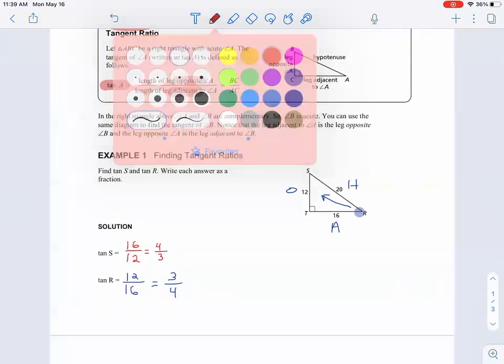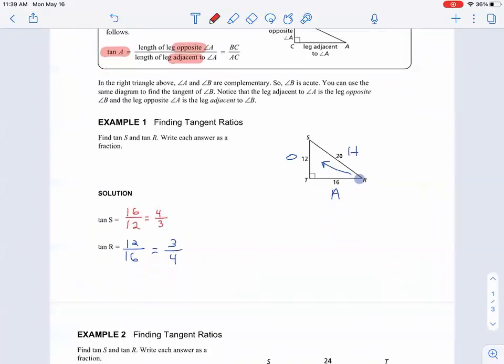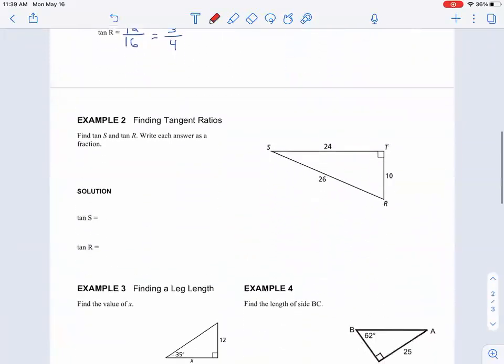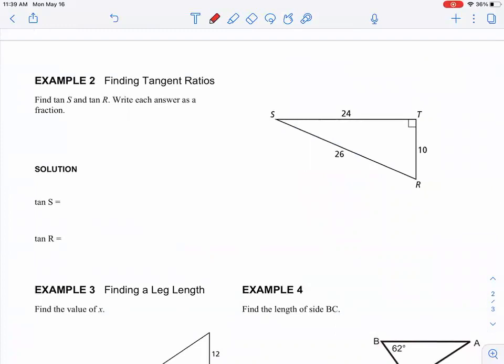All right, we can do this. Well, let me look at example two, and I'm going to do the first part. I'm going to find the tangent of S. So looking at S, this is my angle here.